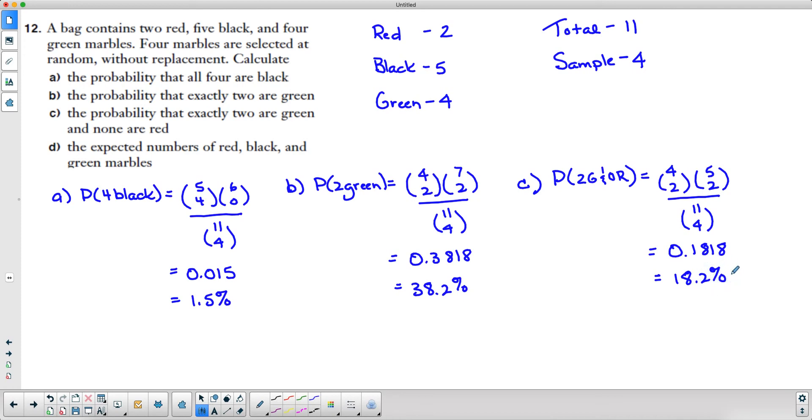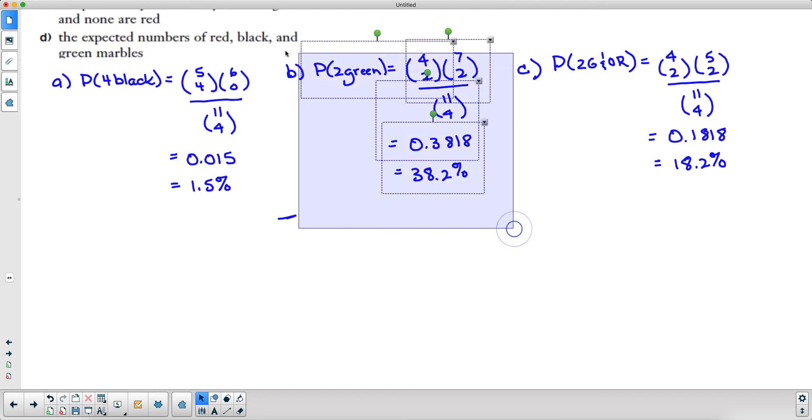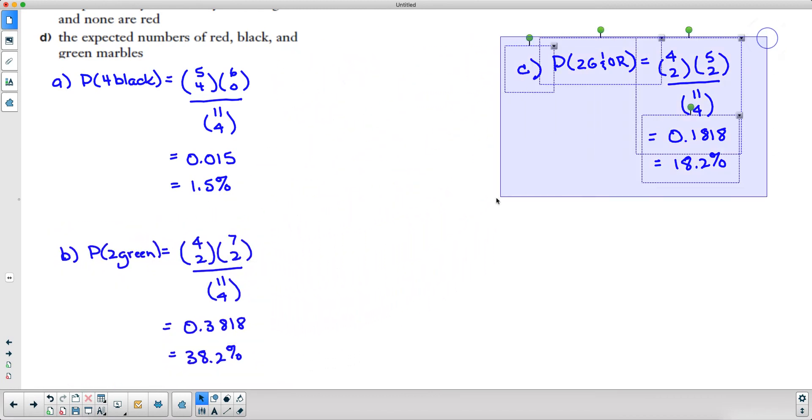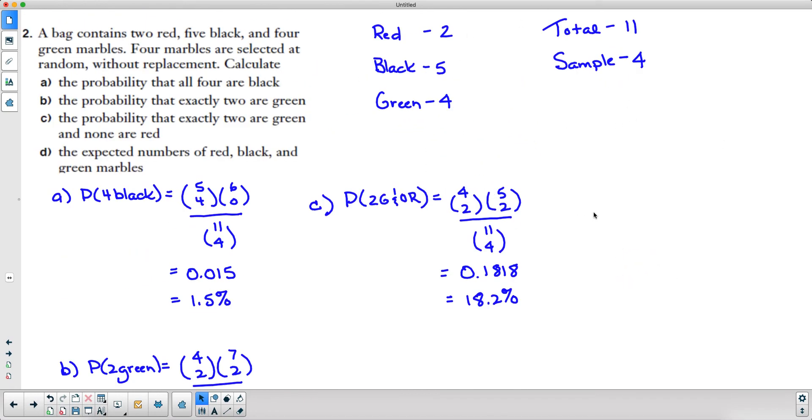Okay, now the last question has to do with expected value. We want the expected value of red, black, and green marbles. What I'm going to do here is shuffle this around so that we can see. I'm going to highlight that and bring it down here, and I'm going to highlight this and bring it over here so that I can actually still see what I've written up here to do part d.